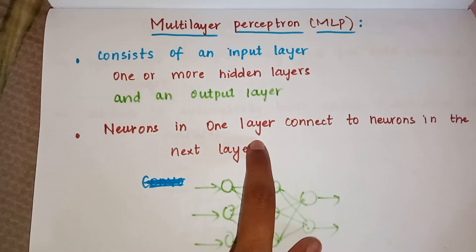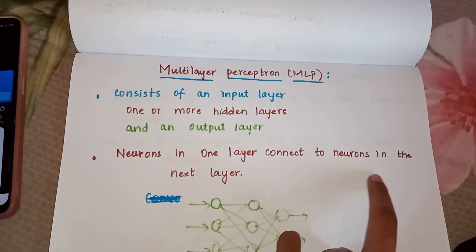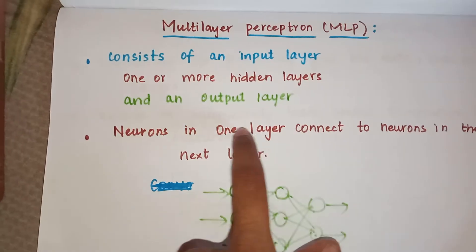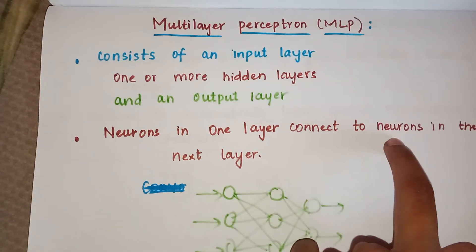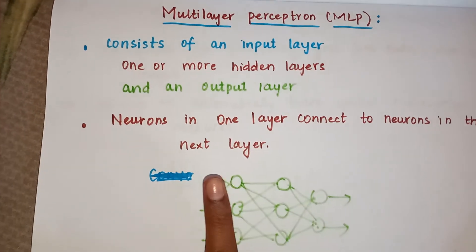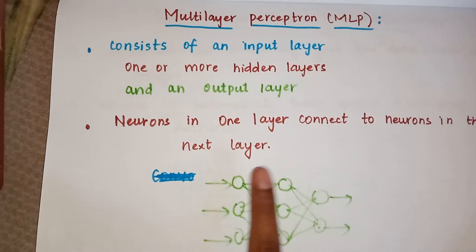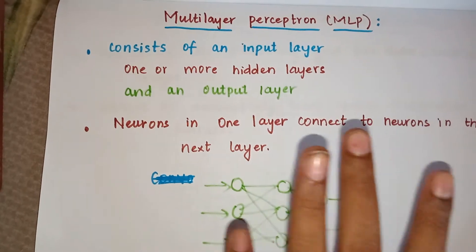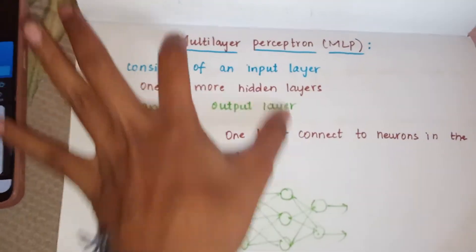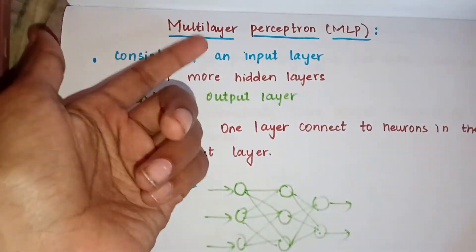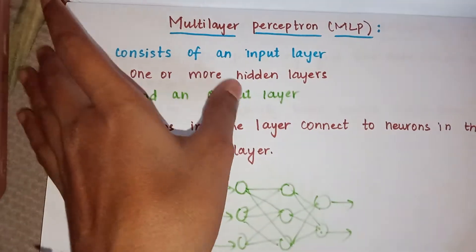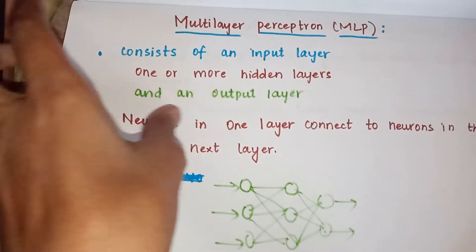As you can see: input layer, hidden layers, and an output layer. Neurons in one layer connect to neurons in the next layer — neurons in each layer get connected to the neurons in the following layer. Basically in multi-layer perceptron, the layers are extra — they are multi-layered, that's it.